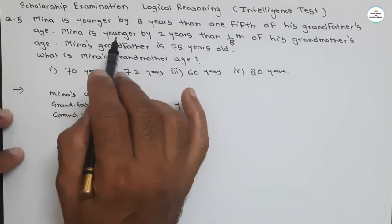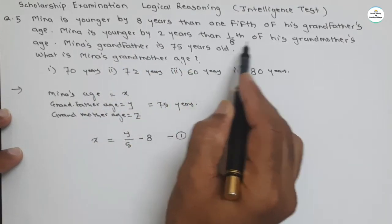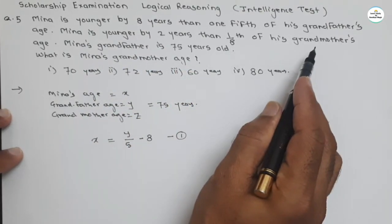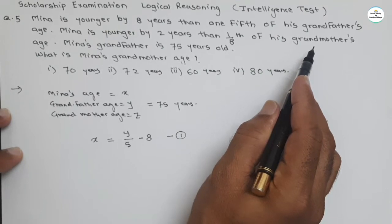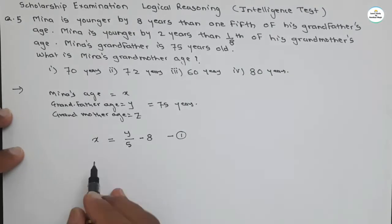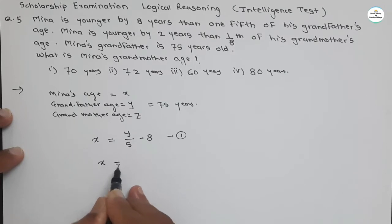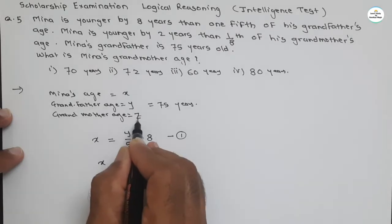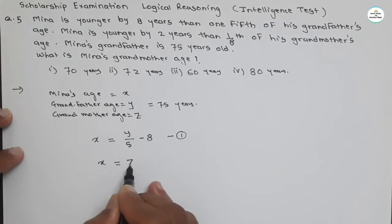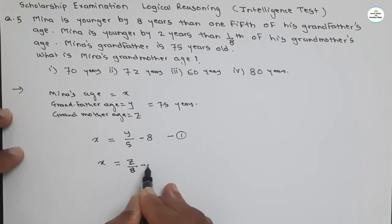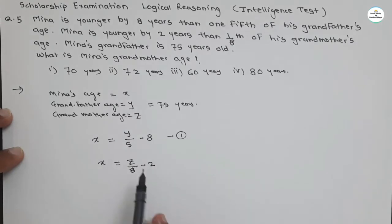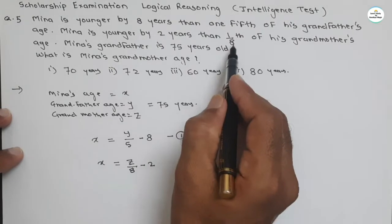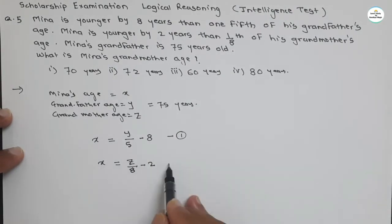Then Meena is younger by two years than one-eighth of his grandmother's age. So one-eighth means X equal to one-eighth of grandmother's age. Grandmother's age we have assumed as Z. So X equal to Z divided by eight minus two. Minus two because Meena is younger by two years. One-eighth means Z upon eight. So these are the two equations.